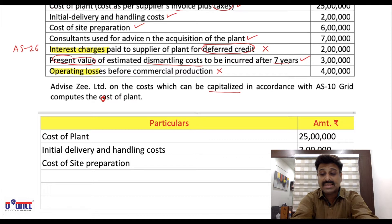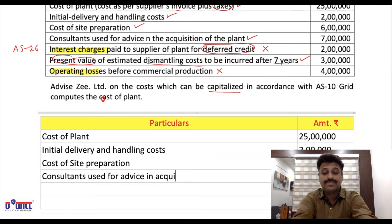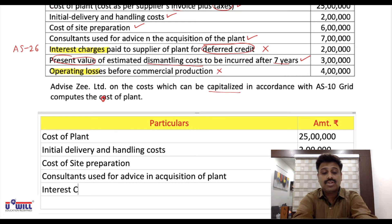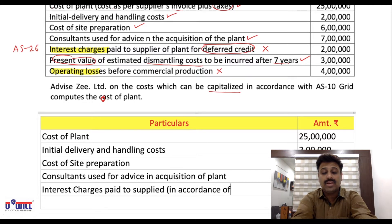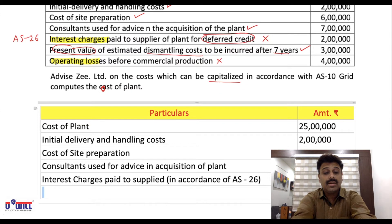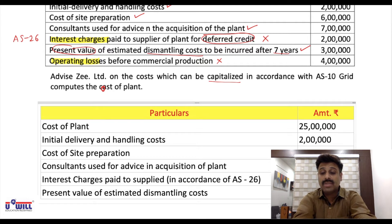Cost of site preparation will be included — that is 6 lakhs. Consultants used for advice in acquisition of asset will be included — that is 7 lakhs. Interest charges paid to supplier for deferred credit are not allowed unless AS 26 specifically permits it, so not included. Present value of estimated dismantling costs will be included — 3 lakhs.